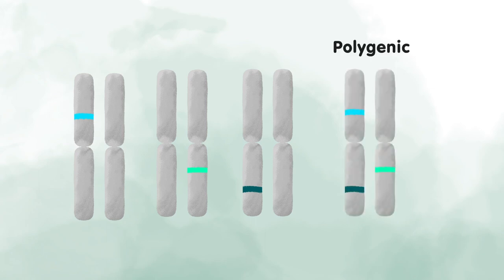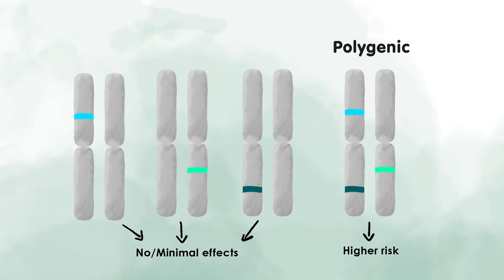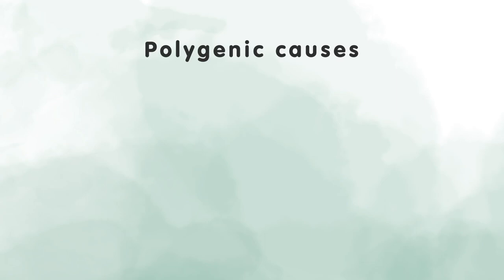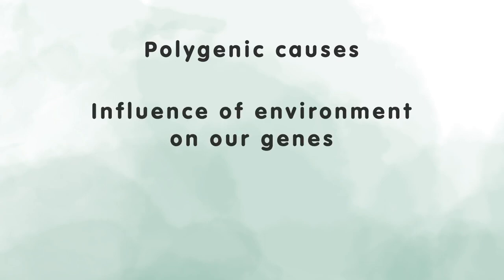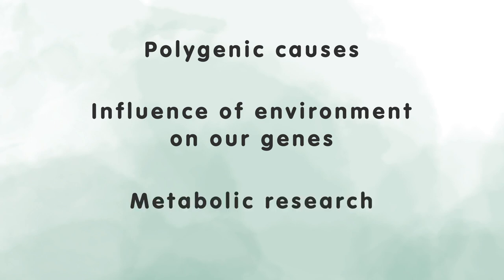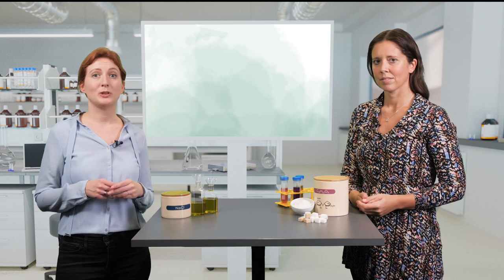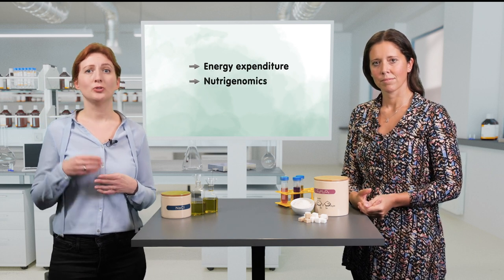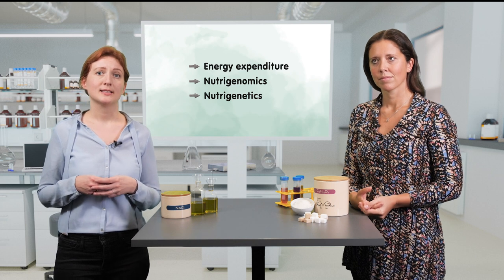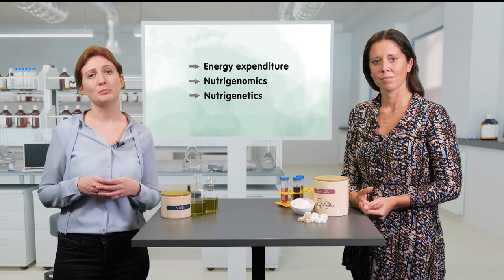The metabolic syndrome is more a polygenic disease. This means that many subtle genetic variants, which each in itself have minimal effects, together have a cumulative outcome and increase a person's risk to get metabolic syndrome. These subtle changes are difficult to track down. Therefore, in the following videos we will discuss those polygenic causes, how the environment can influence our genes, and how scientists measure those changes. To summarize: we explained the term energy expenditure and gave you an introduction to nutrigenomics and nutrigenetics, and we will now give you a deeper understanding of the genetic basis of the metabolic syndrome.